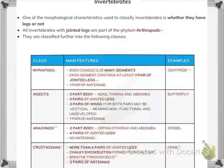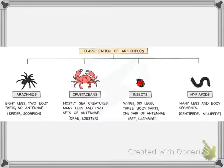The order of arthropod classes from the most to fewest jointed legs is: myriapods, then crustaceans, then arachnids, then insects. This type of question usually appears in Paper 2 MCQs. A diagram format is also provided showing the classification of arthropods.